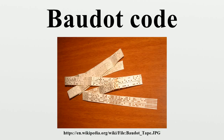Nearly all 20th-century teleprinter equipment used Western Union's code ITA2, or variants thereof. Radio amateurs casually and incorrectly call ITA2 'RTTY', and even the American Radio Relay League's amateur radio handbook does so, though in more recent editions the tables of codes correctly identify it as ITA2.